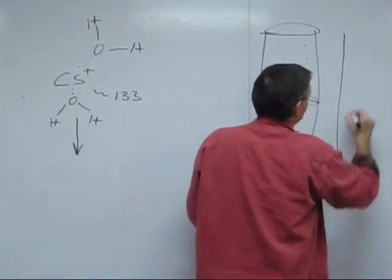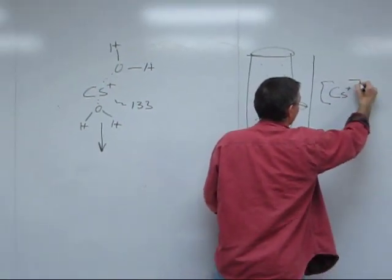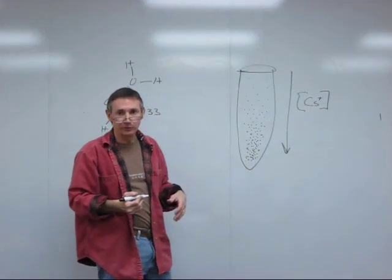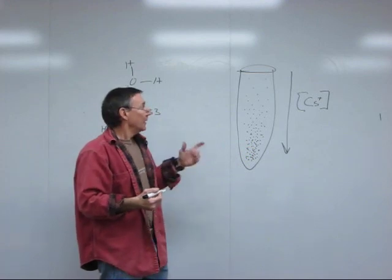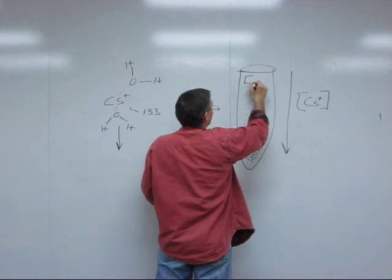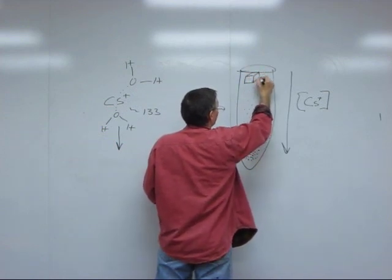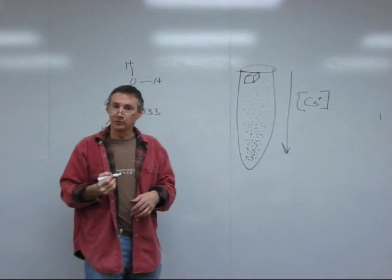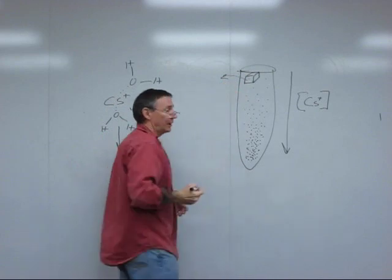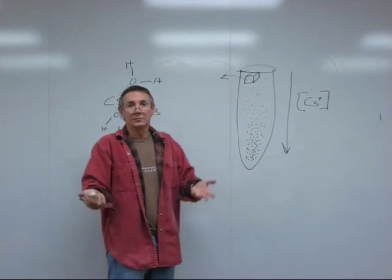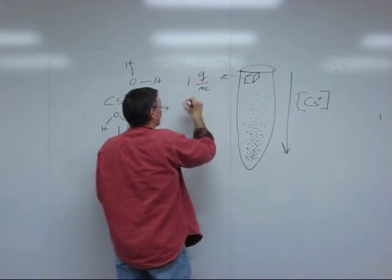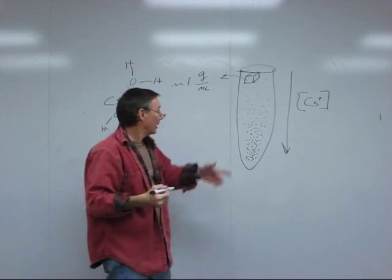So now what we have is an increasing concentration of cesium ions with depth in the tube. Further down in the tube you go, higher the concentration of cesium ions. Now, what that means for the density of the solution is this. Imagine you took one cubic centimeter of the solution up near the top of the tube. That's one milliliter. If you were to take that out and look at it, it's almost all water. One milliliter of water weighs a gram. So it's really close to one gram per milliliter up here.